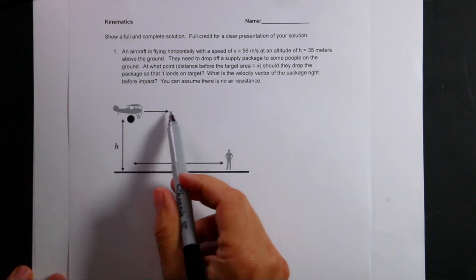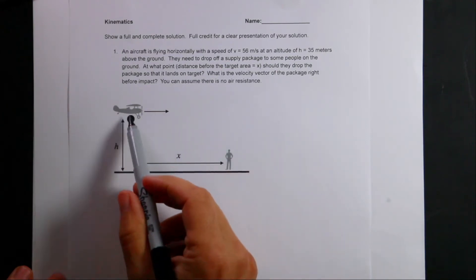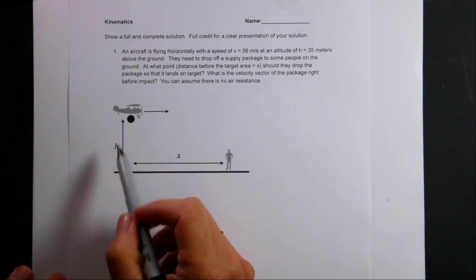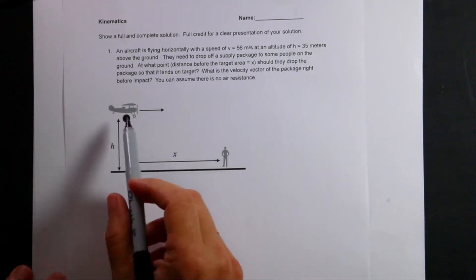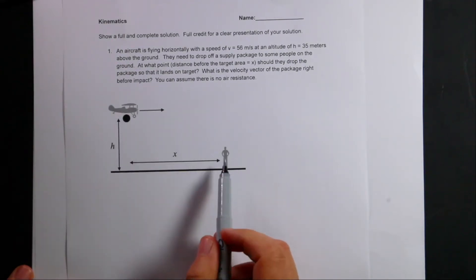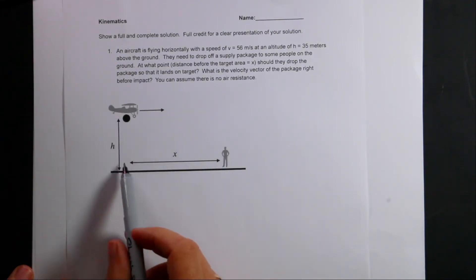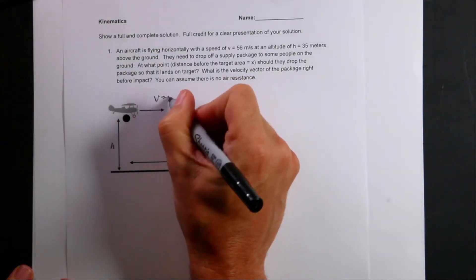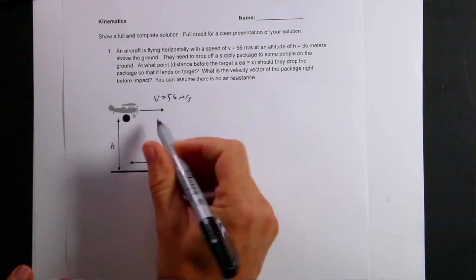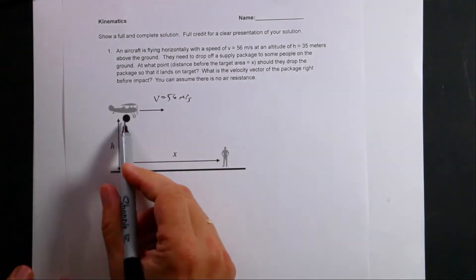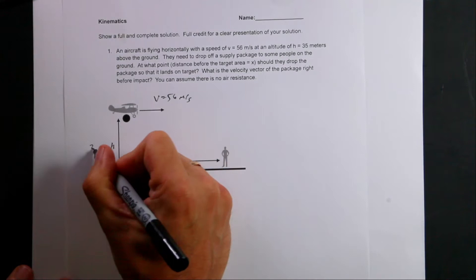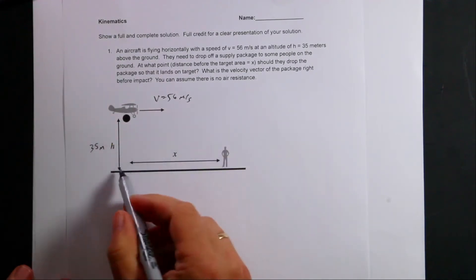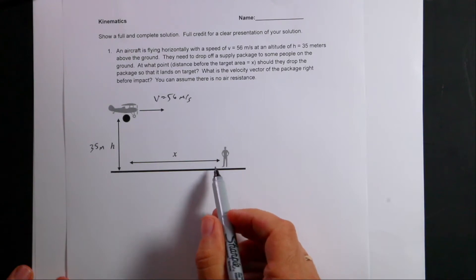Here's the story. A plane is flying this way with some velocity and it's carrying a package. There's the package right there. And they want to drop the package so that it arrives at this person down on the ground. So the question is, if we know the velocity v is 56 meters per second in the horizontal direction, the height is 35 meters, and the question is, how far before they get to the person should they release the package?